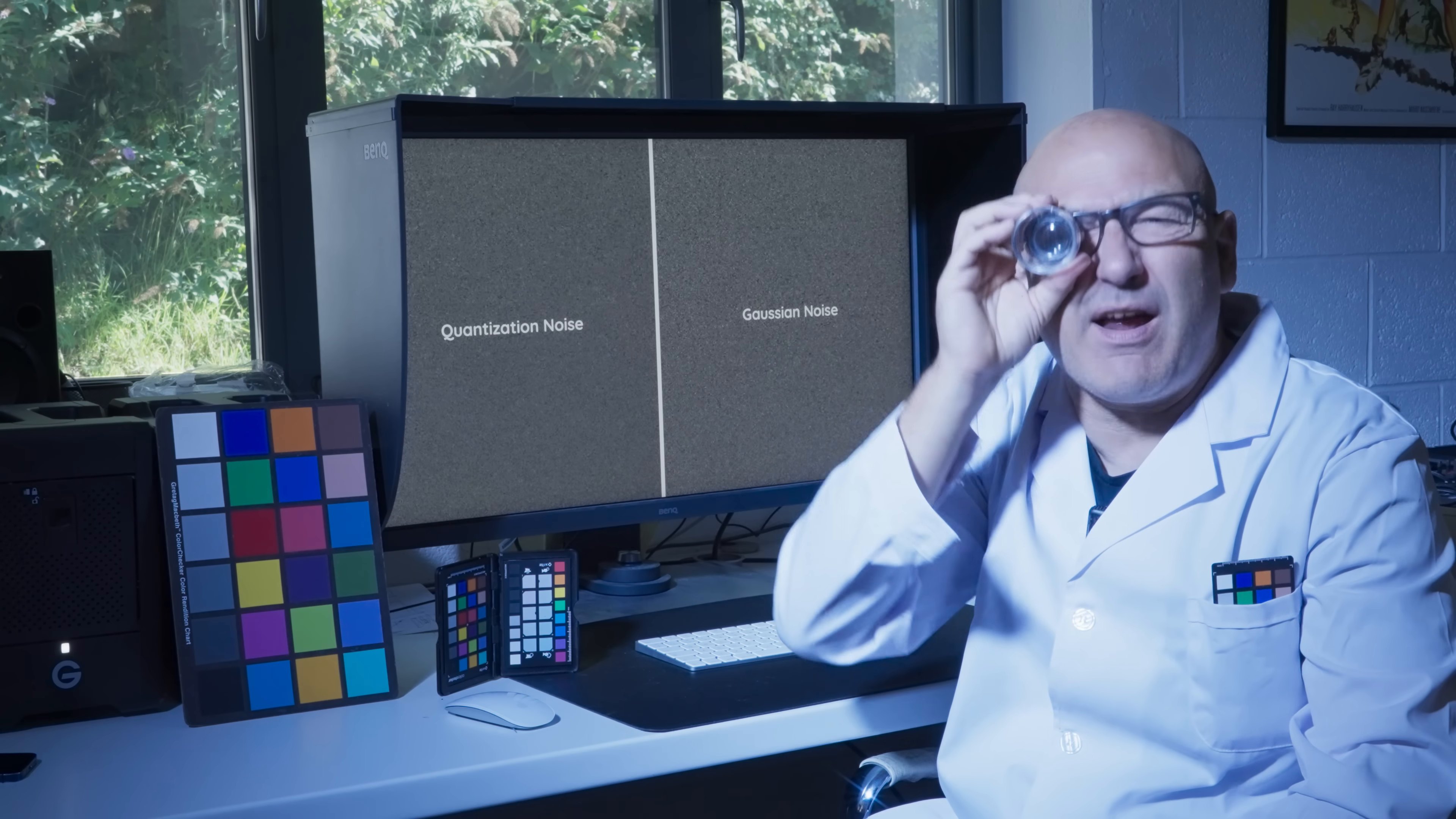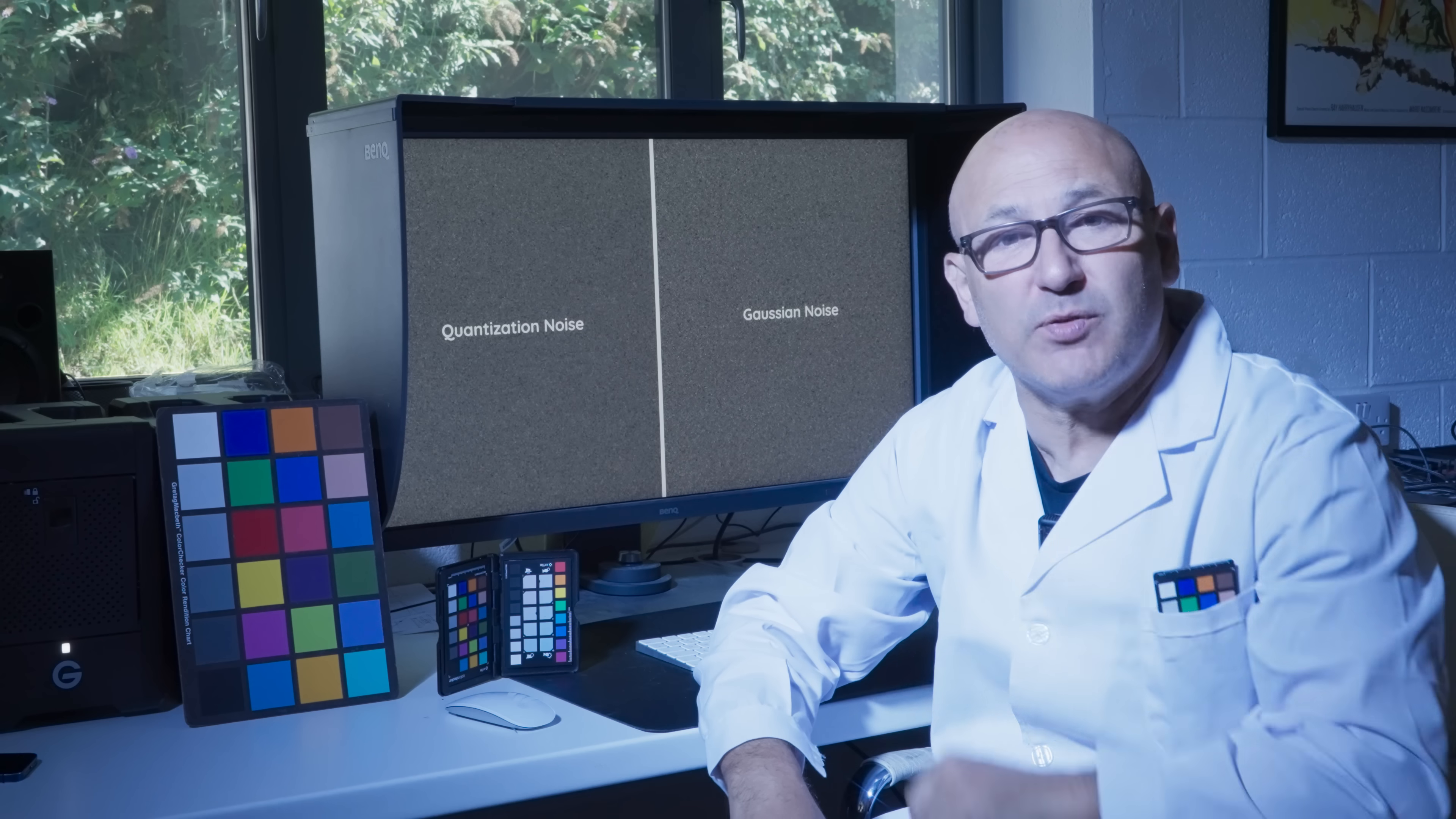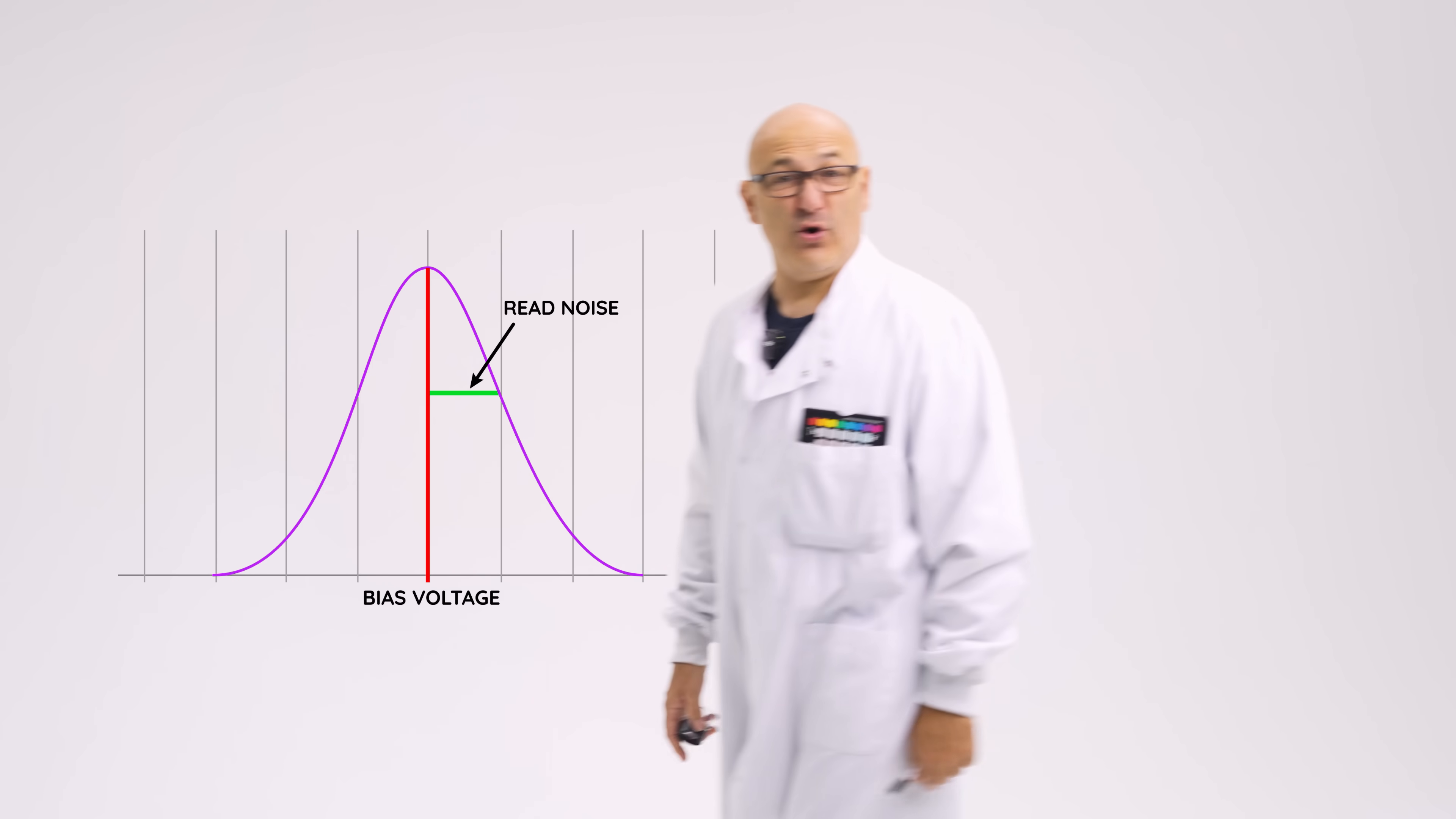Quantization error can be minimized by the use of a higher bit depth ADC, giving a more accurate assignment of the signal to a finer digital step. This has to be balanced against speed of processing the bigger files and final color bit depth required. Then there is also noise from voltage fluctuations called read noise. So as you can see, the whole process of converting photons into images is tarnished by noise.